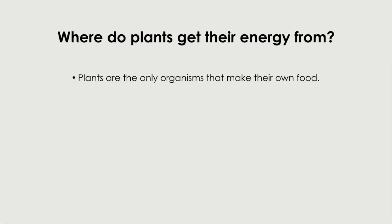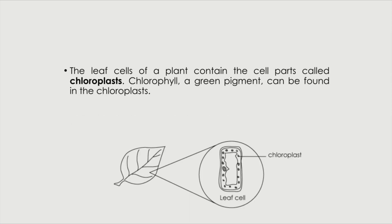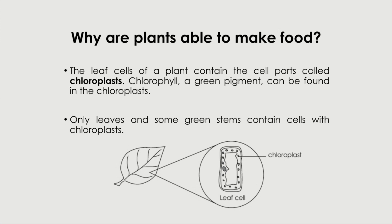Where do plants get their energy from? Plants are the only organisms in the world that make their own food. Plants are not like animals, they do not obtain food by eating. They make their own food through this process called photosynthesis. This unique ability to make food distinguishes plants from other groups of living things. The leaf cells of a plant contain the cell parts called chloroplasts. Chlorophyll is what's found in the chloroplasts and this is basically a green pigment. Only leaves and some green stems contain cells with chloroplasts. And this is how plants can make food because they have chloroplasts which contain chlorophyll.